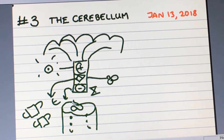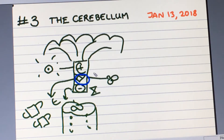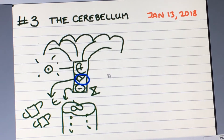When we look at the cerebellar areas, the cerebellum is actually nothing but an outpouching of this vestibular system. Let me just show you where it would lie.